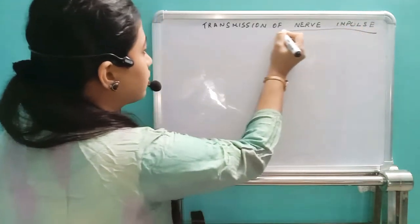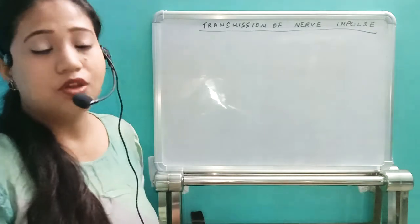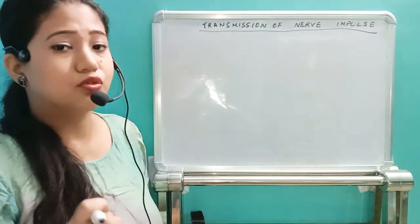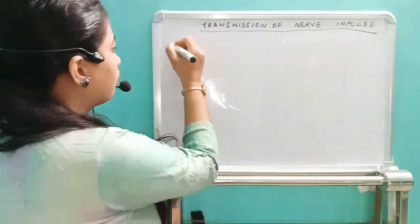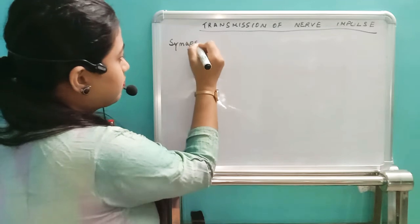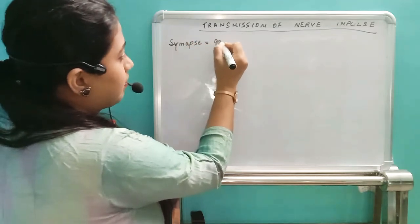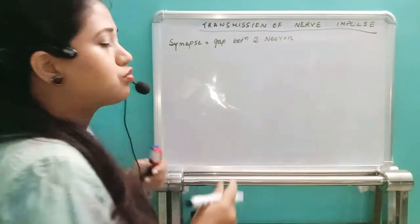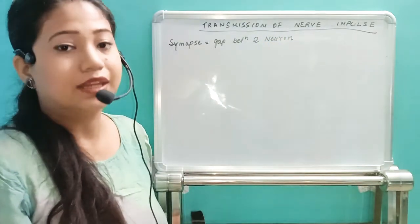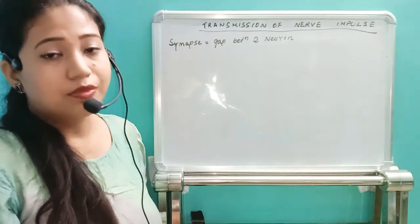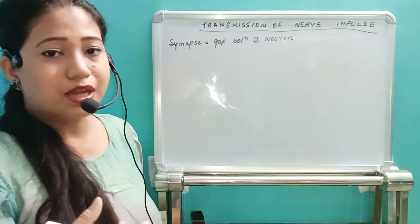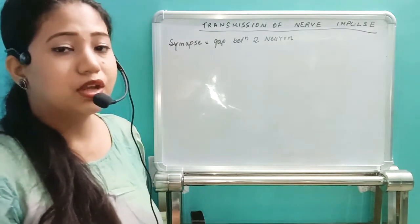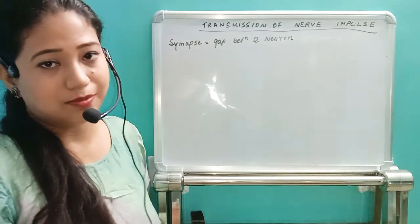When it comes to the transmission of nerve impulse, what you need to know first of all is the synapse. So what is the synapse? Synapse means it is a gap — a gap between two neurons. In between the two neurons, we are going to have a gap, and that gap is called a synapse. Now depending on whether some type of chemicals or neurotransmitters are moving or not, we are going to have two types of synapses.